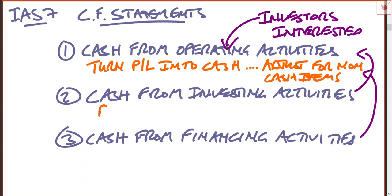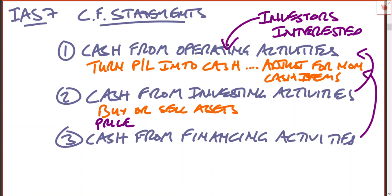Once you've done that, look at your cash from investing activities — that's really easy, it's where you buy or sell assets. We're talking about financial assets, subsidiaries, associates, property plant and equipment — everything. If you buy it, you've paid a price for it; if you sold it, you have proceeds. These items go into cash from investing activities and are usually given to you pretty much on the exam paper — they'll tell you they sold something or bought something, or you might have to do a short working to get it.